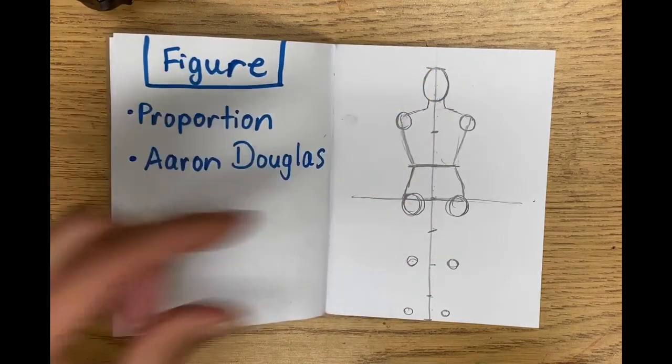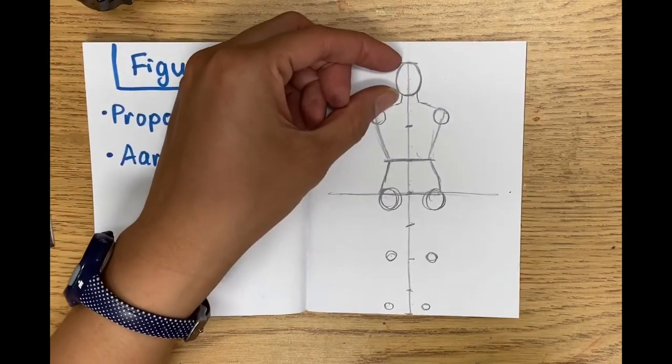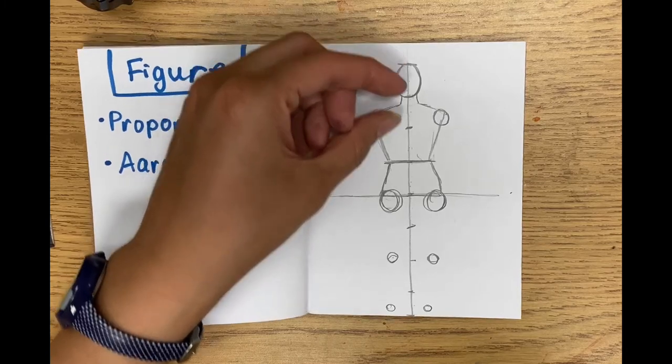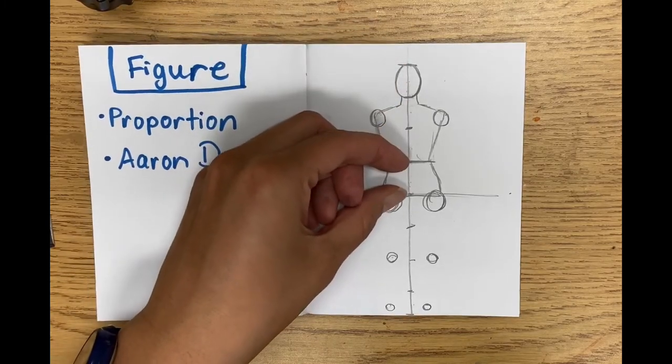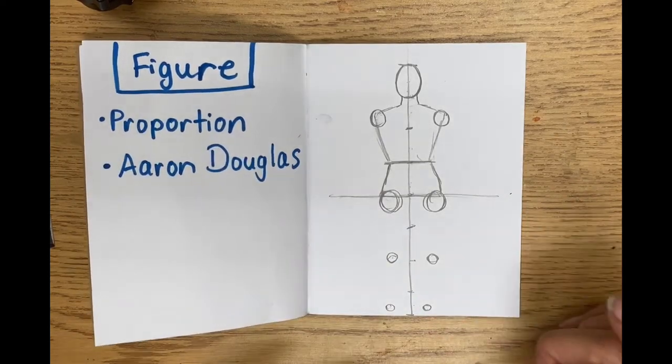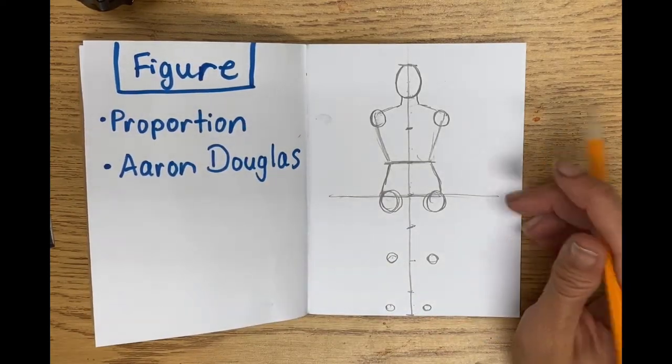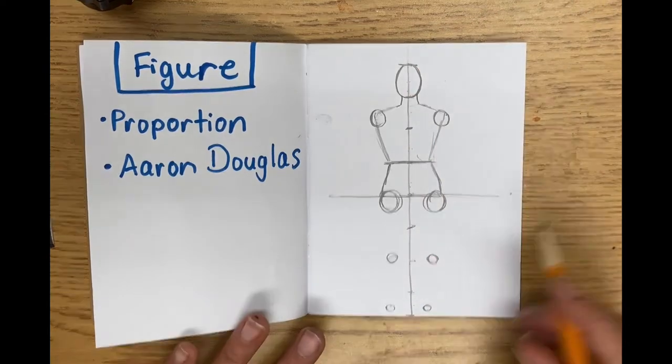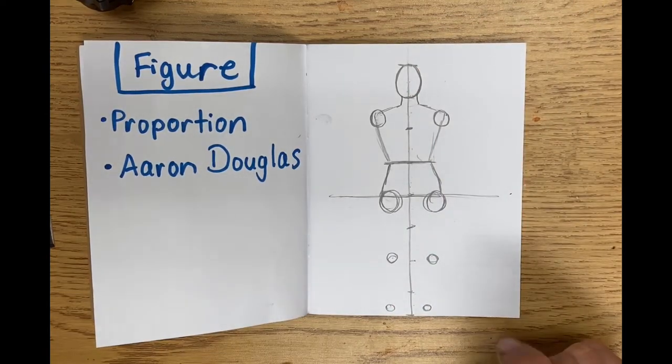So in terms of how big your head is, your head's one head tall. Your torso is one, two, three, and then your legs are one, two, three, four heads tall. Yes, you can measure yourself in the height of your head.